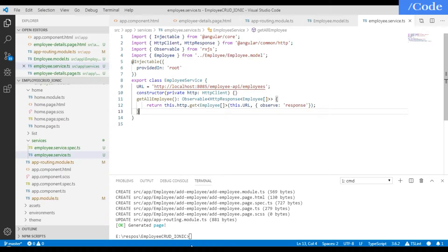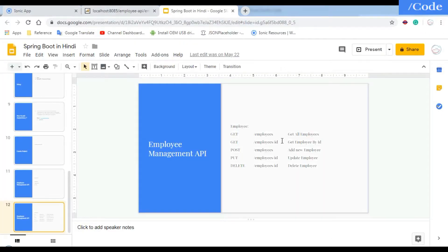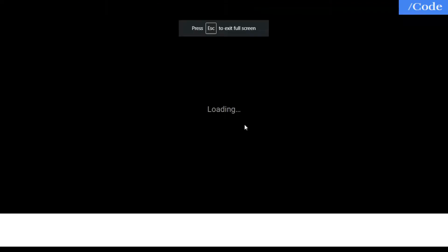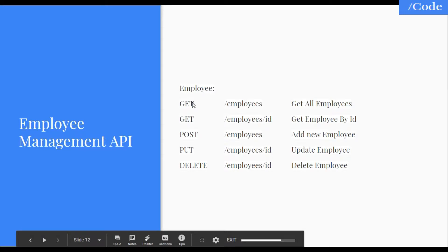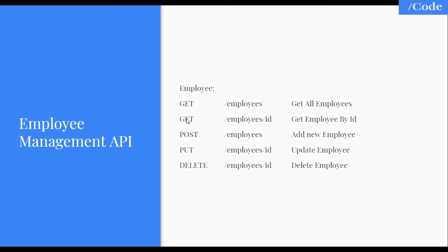Let me show you my employee REST API — this is just a presentation where I have all the operations defined: GET, POST, PUT, and DELETE. GET is done for all employees. For POST, we pass the employee details and it adds the record. For PUT, we pass the ID to update employee details, and for DELETE, we pass the ID and it deletes the employee.